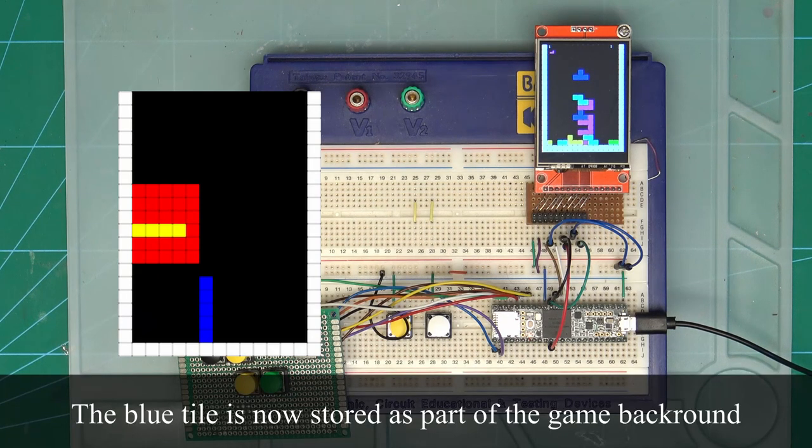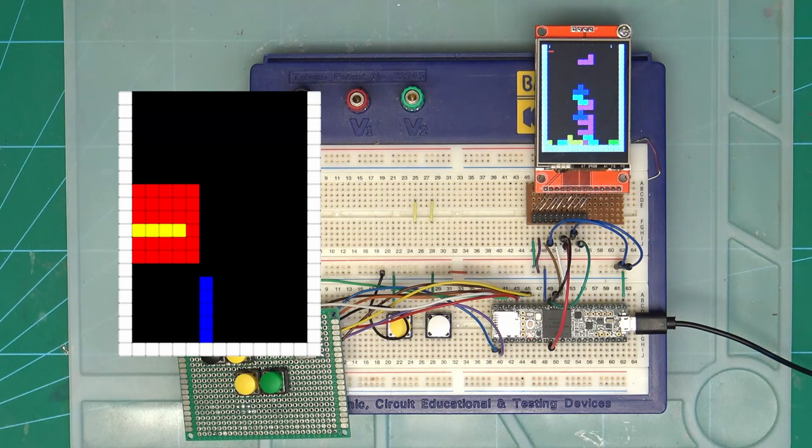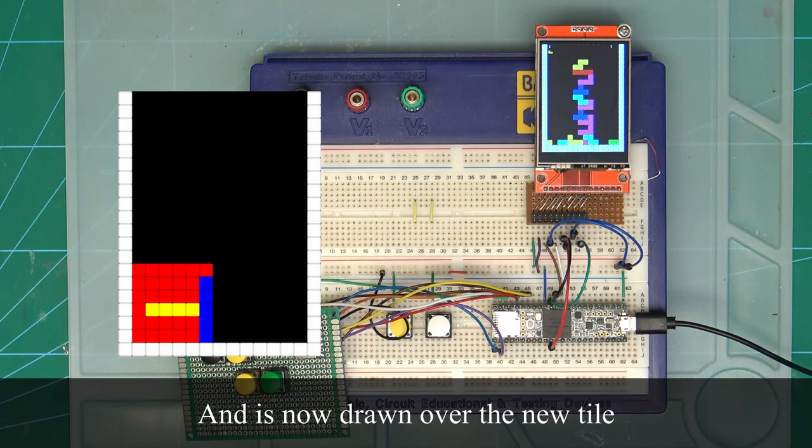When a block is actually physically placed on the tile, we then store it into the memory of the background. So the next time that a tile is put on the screen, it will redraw whatever is around it because that last tile was stored into memory.